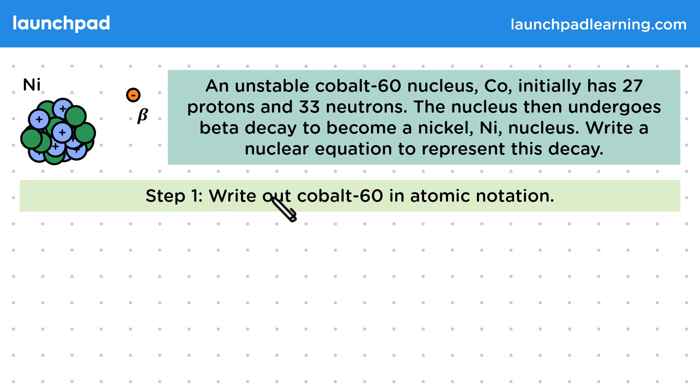So for step 1, we want to write out cobalt-60 in atomic notation. So we have cobalt, which has a mass number of 60, which is the total number of protons and neutrons, and an atomic number of 27.